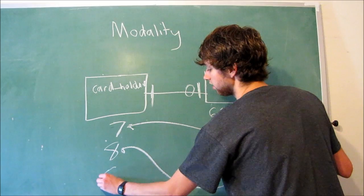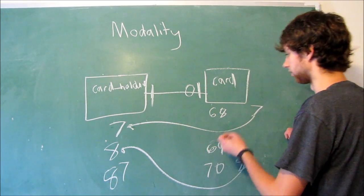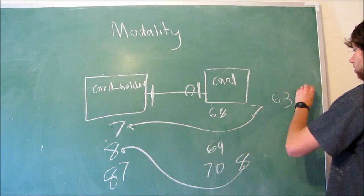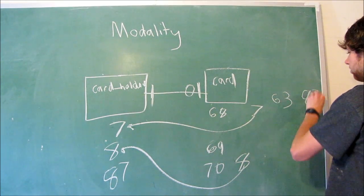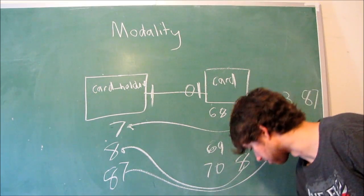And we could have a card 63, which has the owner 87. And that points back to the owner 87. So that's how those relationships work.